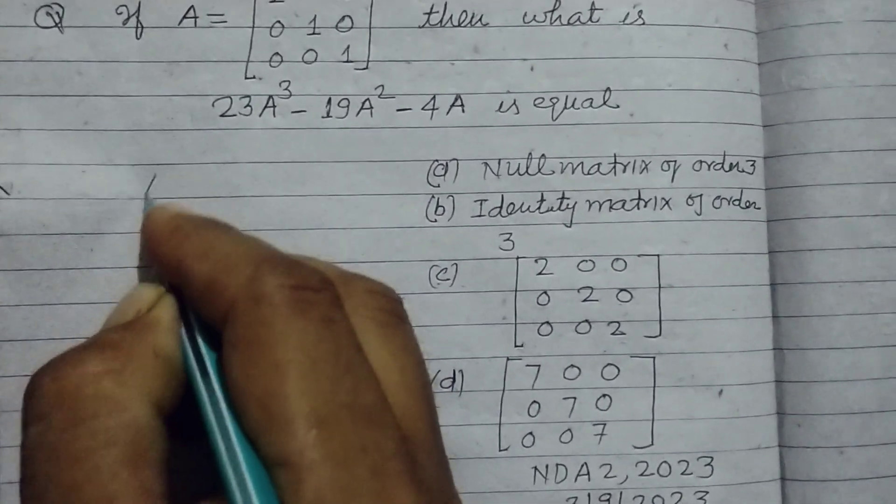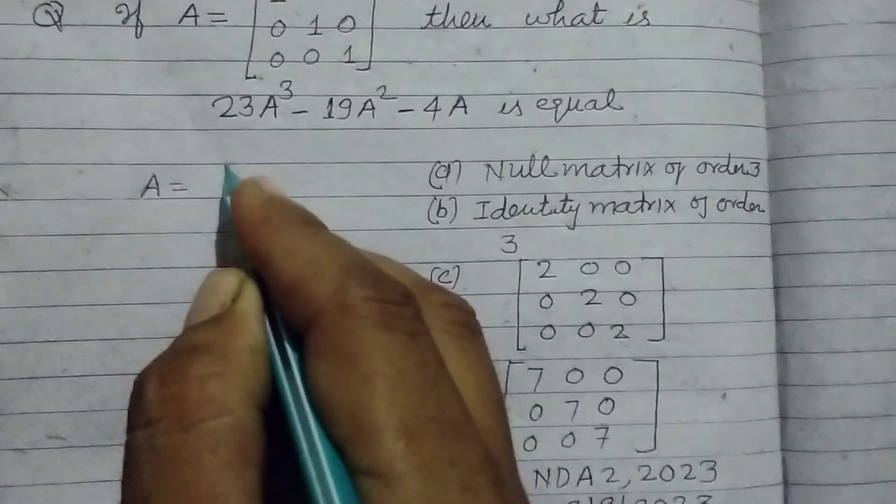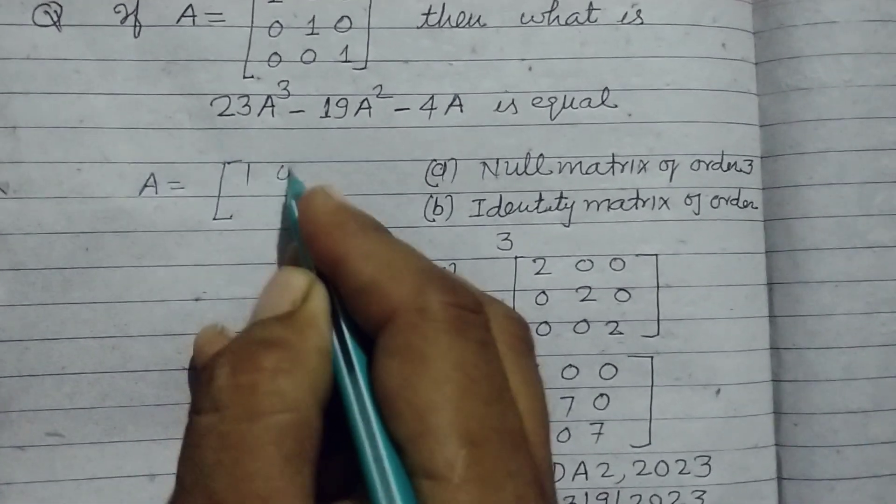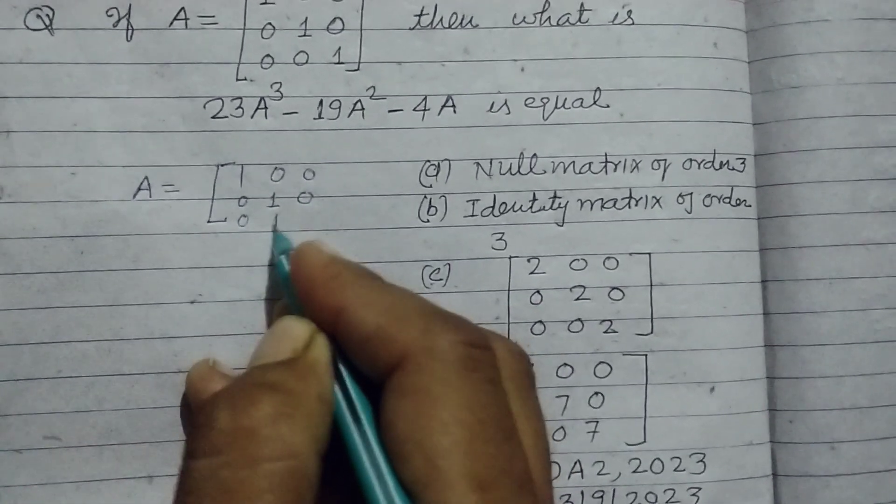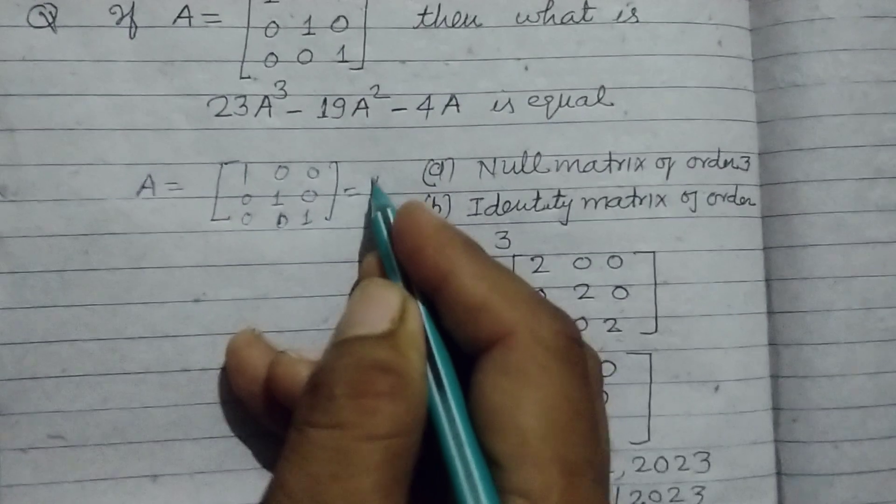So student, here A is given to us as [1 0 0; 0 1 0; 0 0 1]. This is the identity matrix.